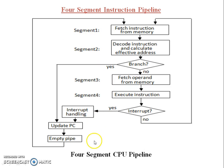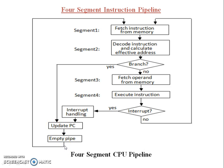This is the diagram for the four-segment instruction pipeline. First, fetch an instruction from memory — segment one. Second, decode the instruction and calculate the effective address — segment two. If a branch does not occur, segment three fetches the operand from memory, then segment four executes the instruction. If a branch does occur, the program counter is updated and the pipeline is emptied — the remaining instructions in sequence are discarded and the branch instruction becomes the next. Then segments one through four are re-executed until the branch is completed.